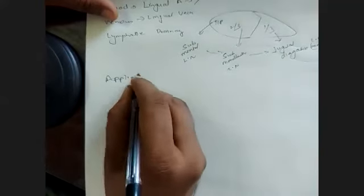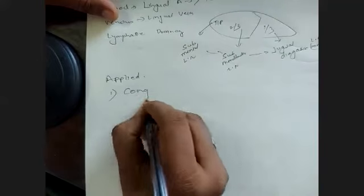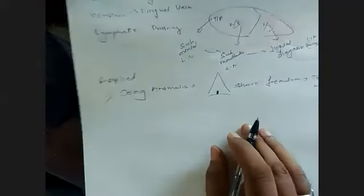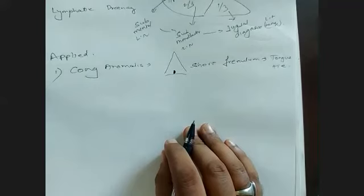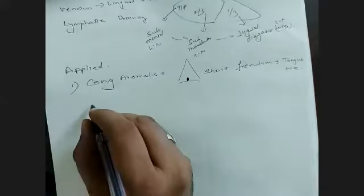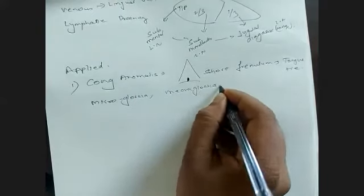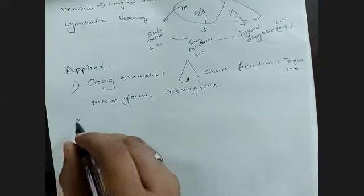Now the applied anatomy of the tongue. First, congenital anomalies. There is an anomaly where the frenulum is very short - this short frenulum leads to a condition called tongue-tie, in which the person is not able to speak clearly because the movement of the tongue gets restricted. A small tongue is called microglossia. A large tongue is called macroglossia.